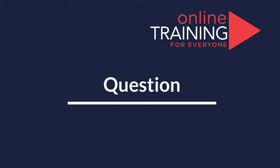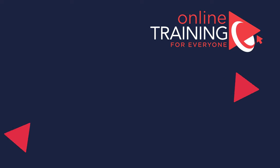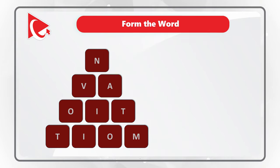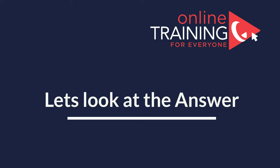One of the very hard challenges is forming words using a certain number of letters. In this question, you are presented with 10 letters and you need to form a word using all the letters only once. The letters are N, V, A, O, I, T, T, I, O, M. Give yourself 20 to 30 seconds. As you might have guessed, the word is 'motivation.'